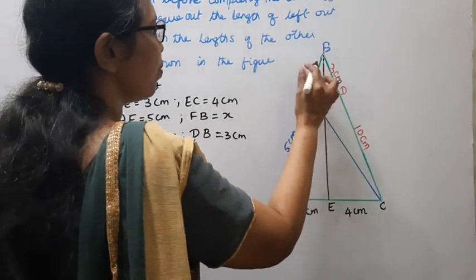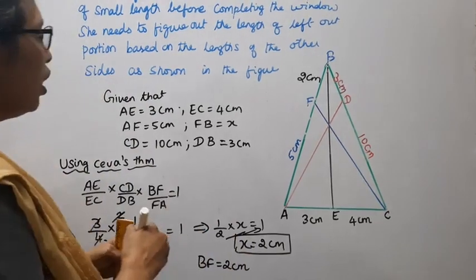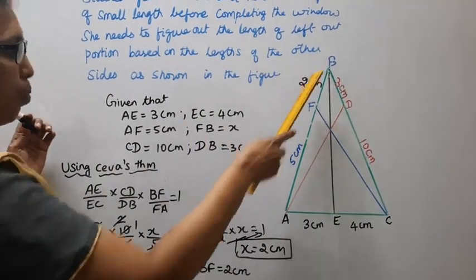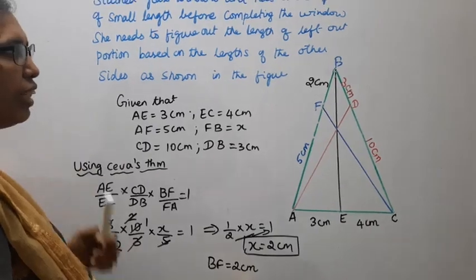Therefore BF = 2cm. The small piece of length is BF = 2cm.